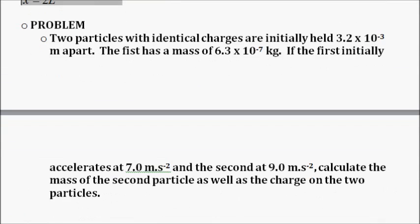Let's just look at one more for this video. Two particles with identical charges are initially held 3.2 times 10 to the power negative 3 meters apart. The first has a mass of 6.3 times 10 to the power negative 7 kilogram. If the first initially accelerates at 7 meters per second... Well let's do that. This is quite a longer problem. We'll leave that for the next video.